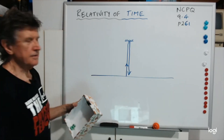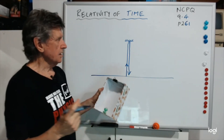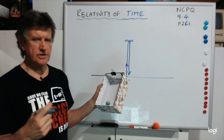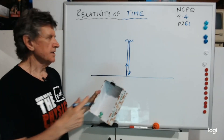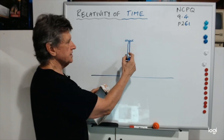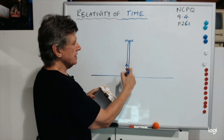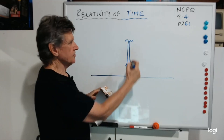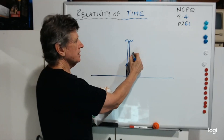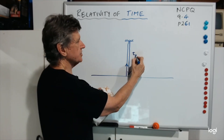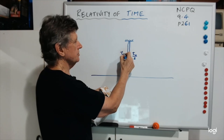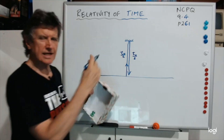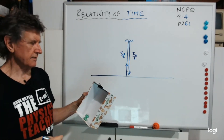Now we said the time would be t0, so it takes t0 to do the whole trip. That section of the trip would be t0/2 and t0/2. That's the time taken.